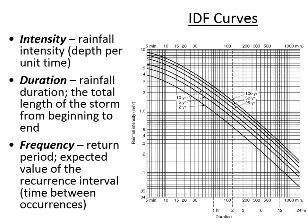This curve shows that for a certain return period, each curve represents a different return period: the two-year storm, five-year, ten-year, and so on. The storm duration is on the x-axis. For example, for a one-hour duration, ten-year return period, you go over sideways and it would be about 1.7 inches per hour. That's how you use an IDF curve, and you've just been through the process of generating one.